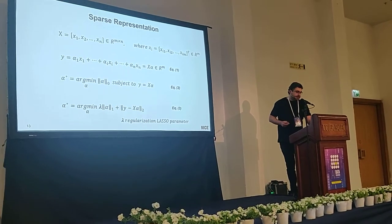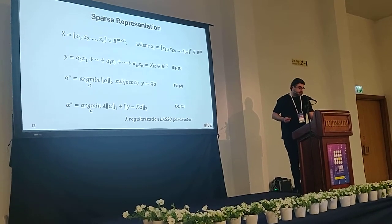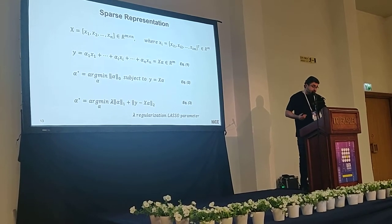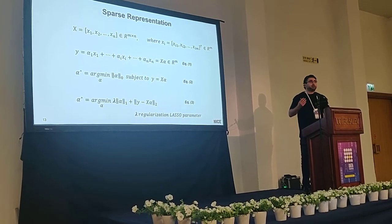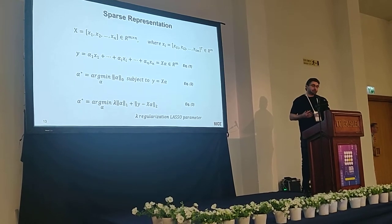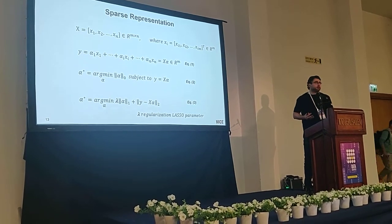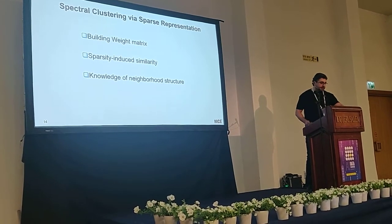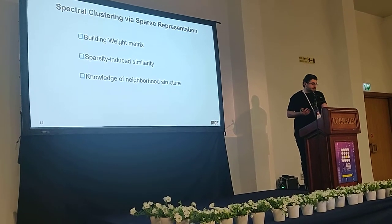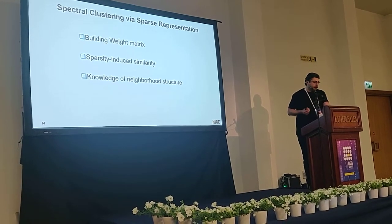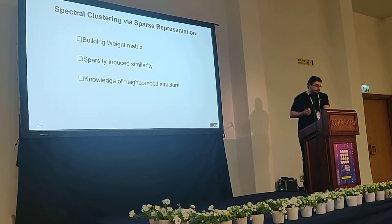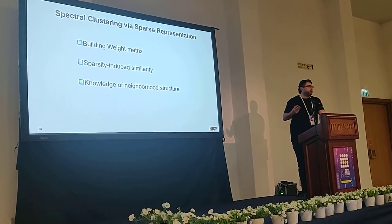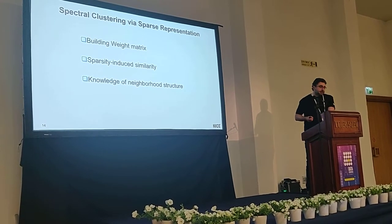Typically, clustering on compressed representation performs better — it has better time and space complexity than on the original data. The connection between sparse coefficient vectors and similarity between objects is as follows: sparse coefficient vectors corresponding to two similar objects are similar, while those corresponding to two dissimilar objects are dissimilar. The main idea of clustering via sparse representation is to build a weight matrix directly from normalized and symmetrized sparse representation coefficients, called the sparsity-induced similarity measure. This approach derives from sparse representation and can reveal neighborhood structure without calculating actual Euclidean distances, offering great potential for clustering of high-dimensional data.